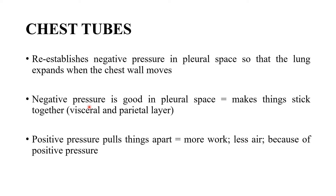When there is positive pressure in the pleural space, this is a life-threatening emergency. It severely impairs venous return and cardiac output. This situation occurs in pneumothorax, hemothorax, or pneumohemothorax, and a chest tube is the way to manage it.